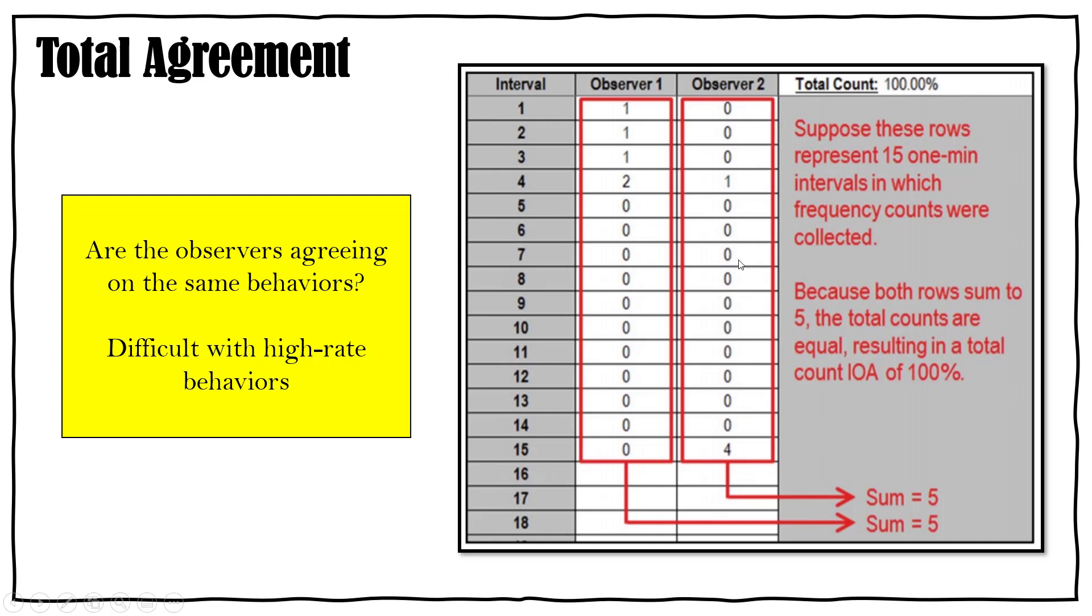So if you do total agreement with this example you're going to get 100%, but when you actually look at the behaviors that are being recorded they're not the same. Now in the classroom if you have a behavior that is very discrete, has a clear start and stop, very easy to record, this probably isn't an issue. But if you get to a behavior that's a little bit more difficult, then this is something to take into account. Also, total agreement is kind of difficult with high rate behaviors. For example, if you have a kid who taps his pencil constantly and you want to record that, well that's really hard. Tapping the pencil can happen at very high rates and it can be hard to record, and therefore a total agreement might be hard to calculate.